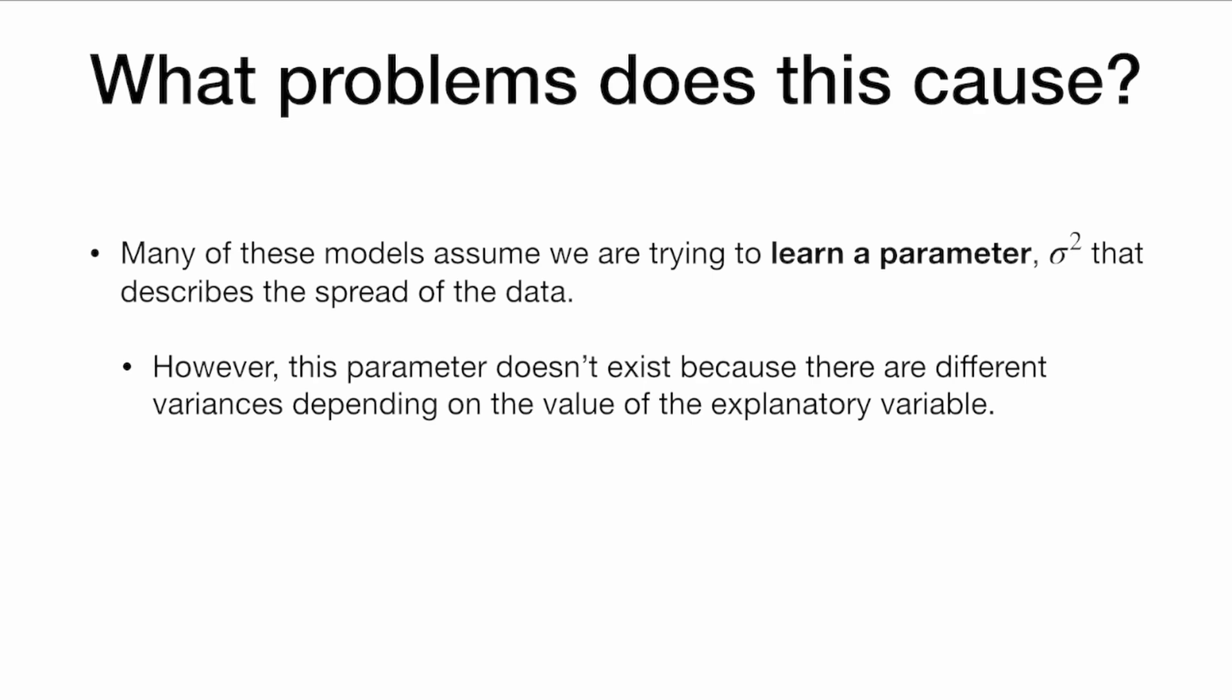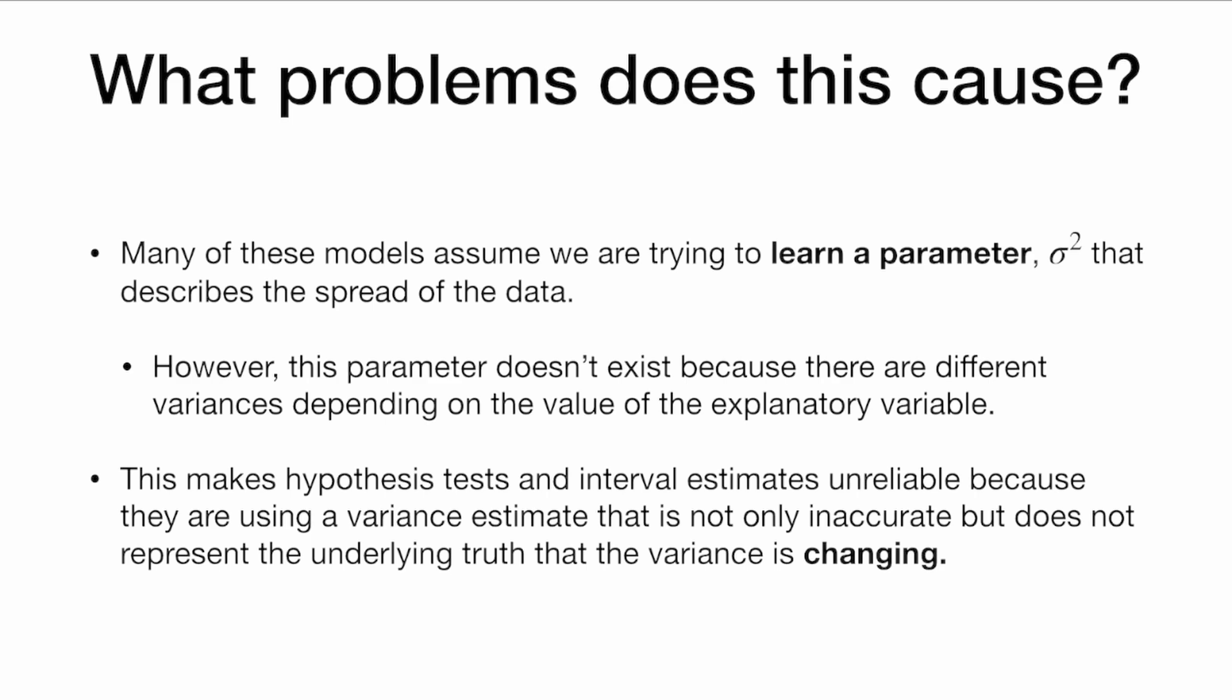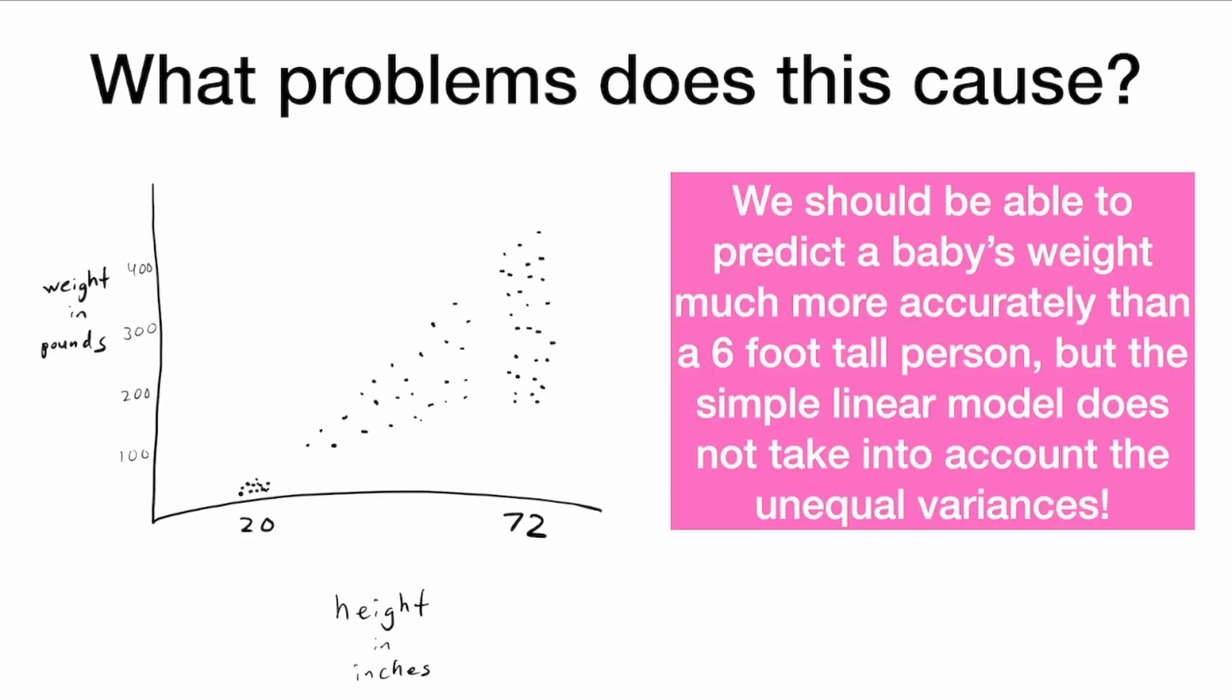There are different variances depending on how tall you are. And this makes hypothesis tests and interval estimates unreliable because they are using a variance estimate that is not only inaccurate but does not really represent the underlying truth that the variance is changing. So we should be able to predict a baby's weight much more accurately than a person who is six feet tall. But the simple linear model does not take into account the unequal variances.